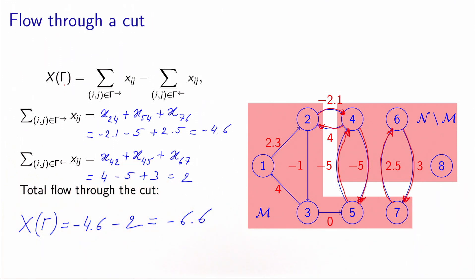The result is negative, which means the net flow going through the cut travels from the right bank to the left bank. If it were positive, it would go from the left bank to the right bank.